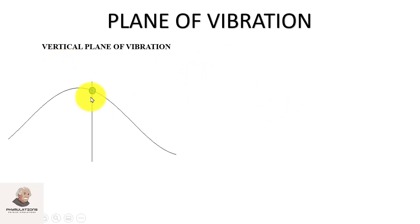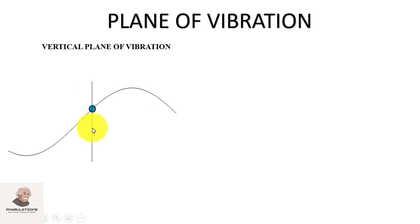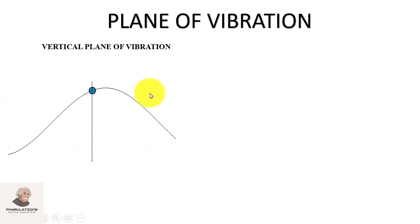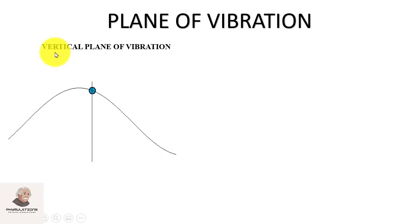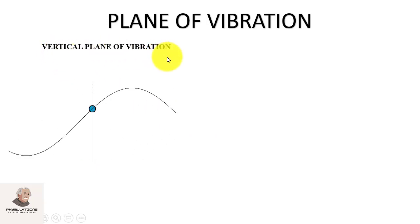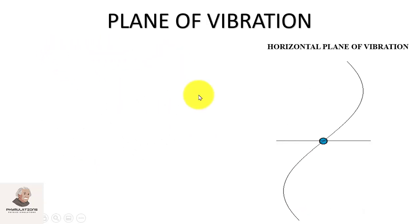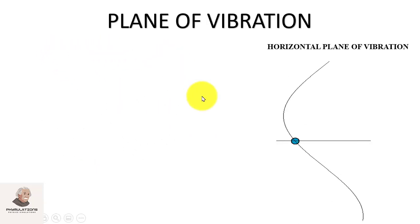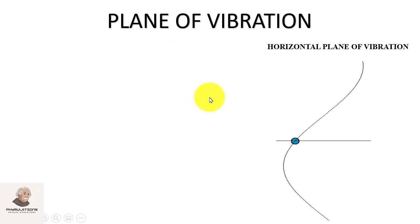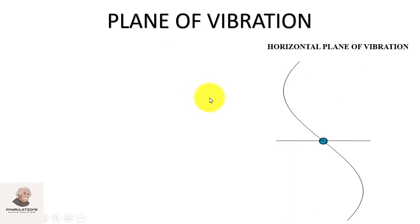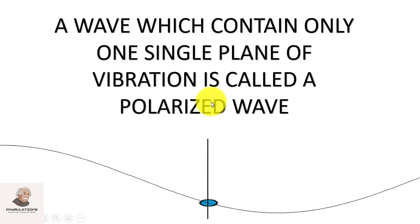A vibrating electron will create an electromagnetic wave. That single wave is having a vertical plane of vibration. Similarly, this other wave is having a horizontal plane of vibration.